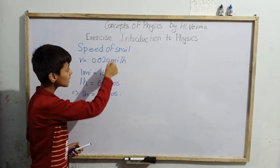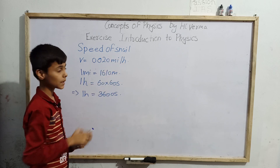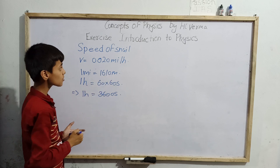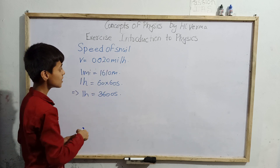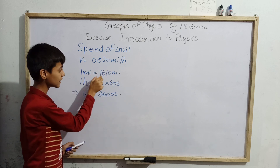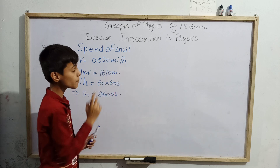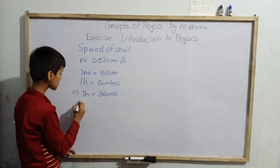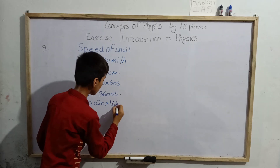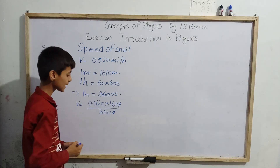So for 0.020 miles per hour, we multiply by 1610 meters per mile and divide by 3600 seconds per hour, since per hour means divided by 3600 seconds. We can write this as: 0.020 into 1610, divided by 3600 seconds.